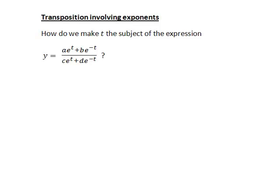In this recording we shall look at how to solve a particular type of transposition problem involving exponents. Transposition of a formula is when we rearrange the formula to make a particular quantity the subject. Suppose we wanted to make t the subject of this expression — t is occurring in the exponent and we have both positive and negative powers of t. So how do we rearrange such an expression to isolate t as the subject?